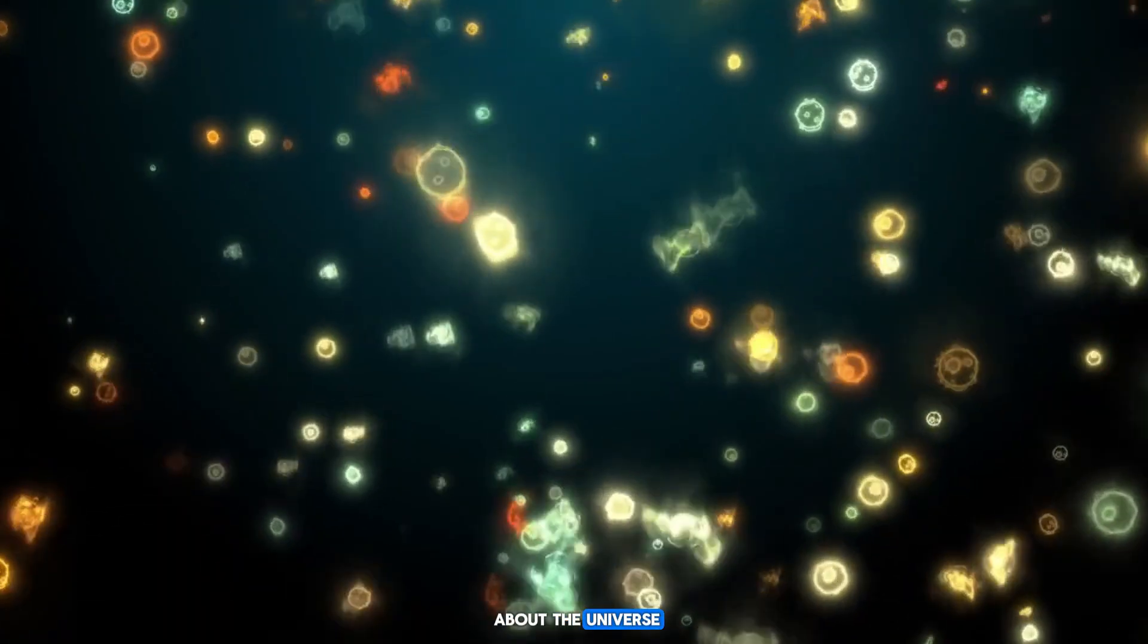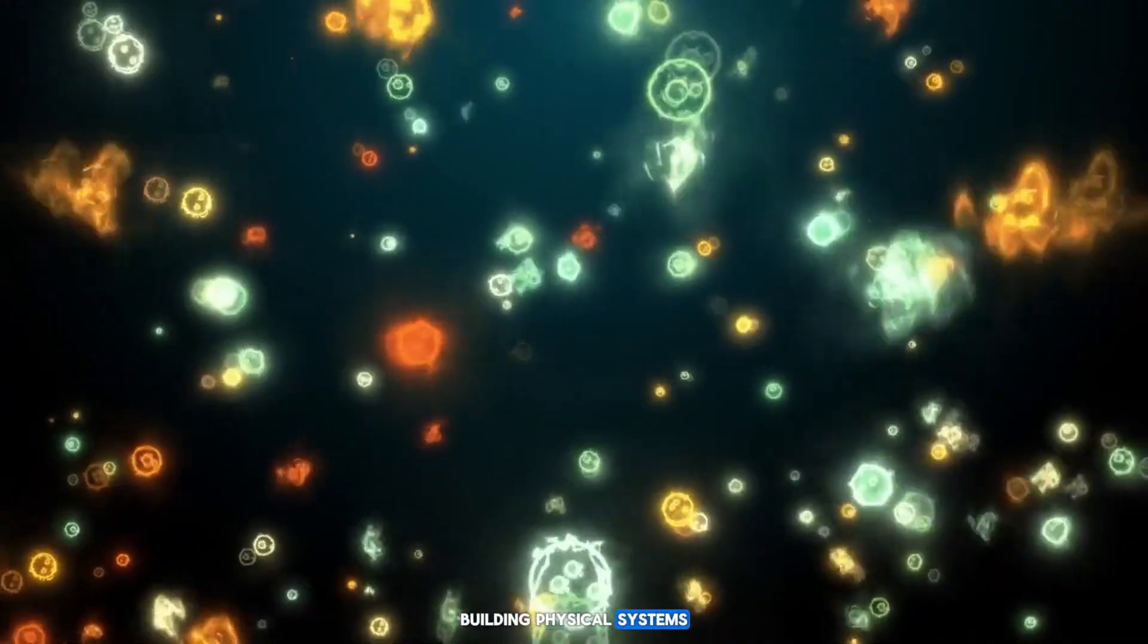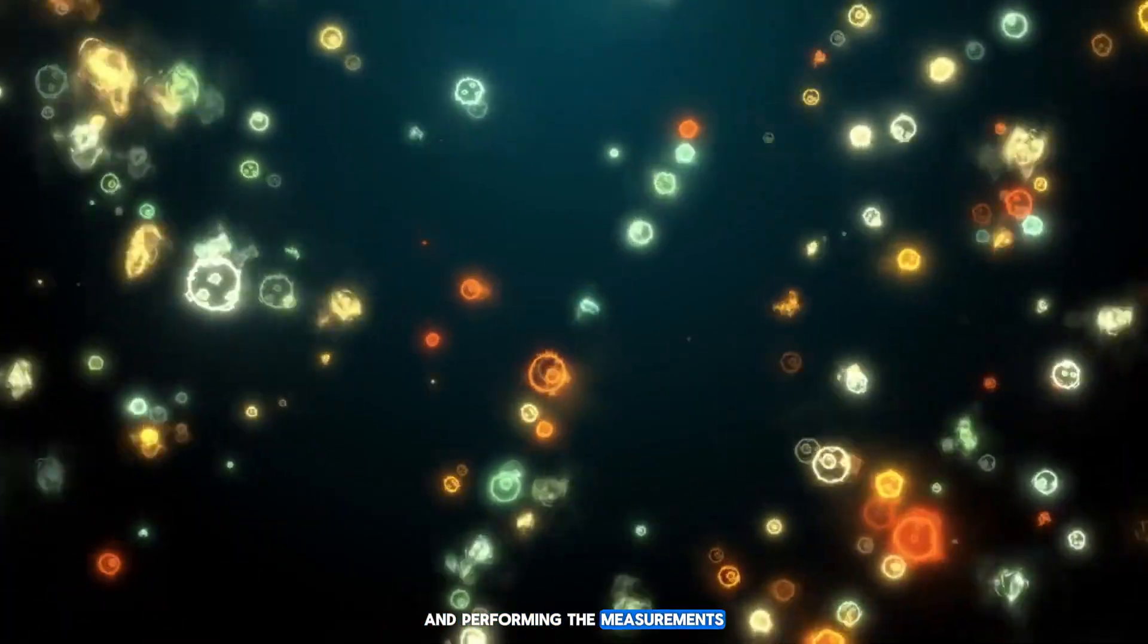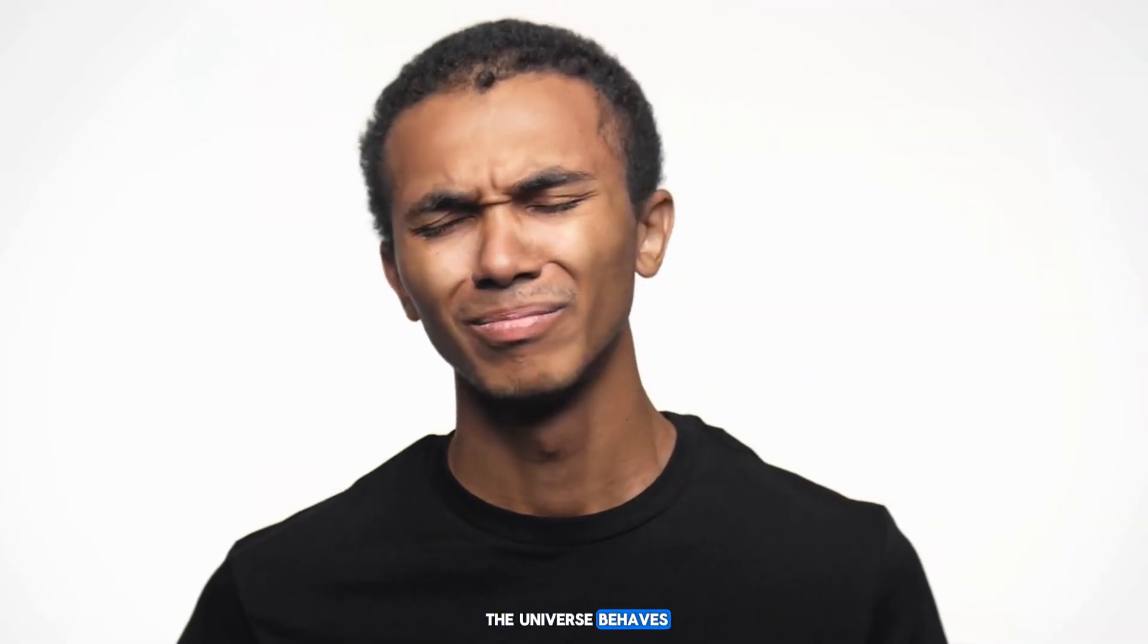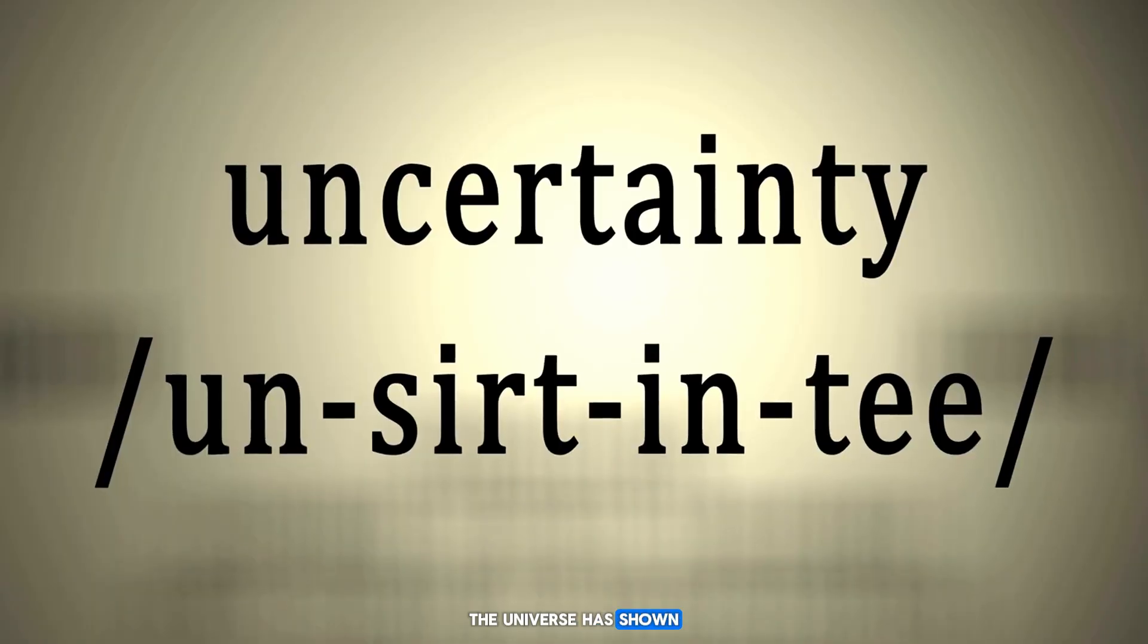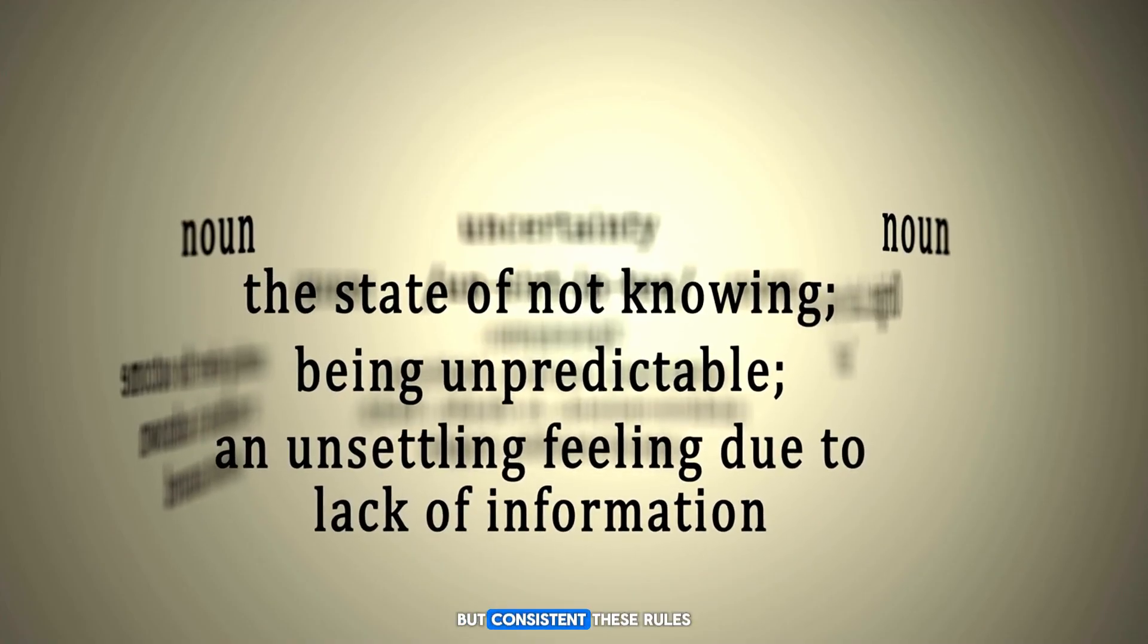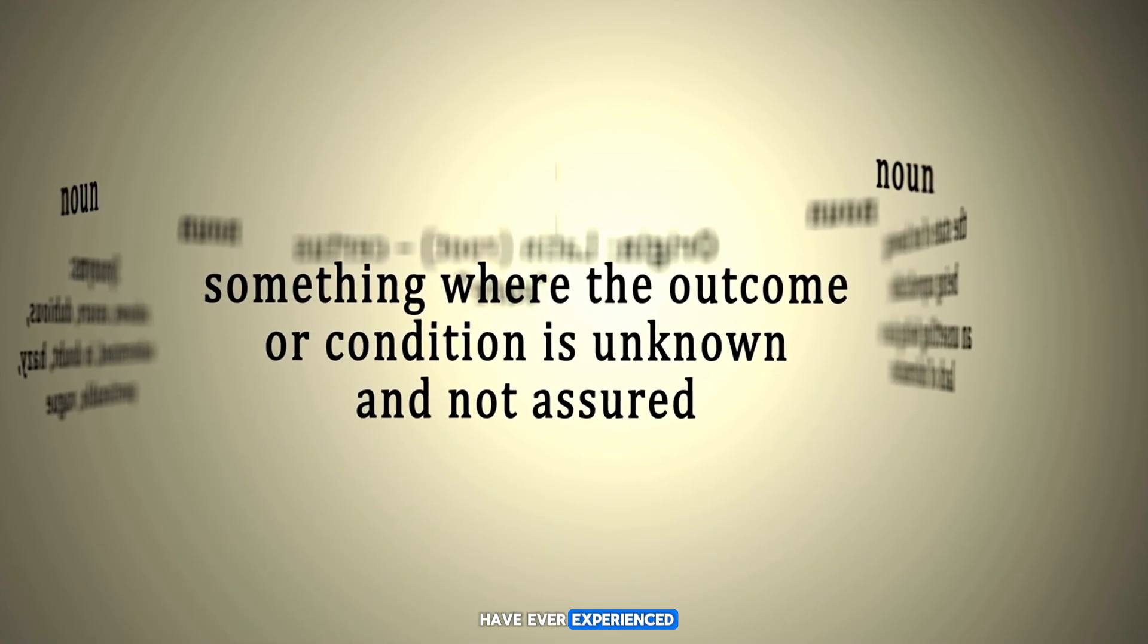What we know today about the universe was learned by asking the right questions, building physical systems, and performing the measurements and observations necessary to determine how the universe behaves, regardless of our prior intuitions. The universe has shown us rules that are strange but consistent. These rules are deeply and fundamentally different from anything we have ever experienced.